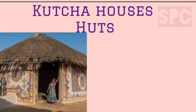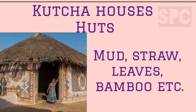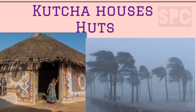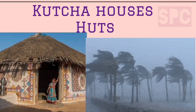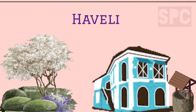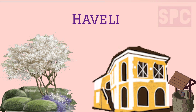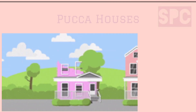In villages we generally find kaccha houses, which are also called huts. They are made of mud, straw, dried leaves, bamboo, etc. They are not very strong and can be easily damaged by heavy rains and storms. Earlier, rich people in villages used to own big and strong houses called havelis.